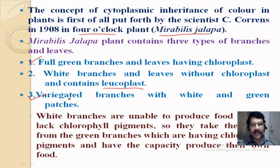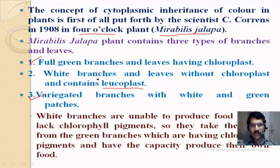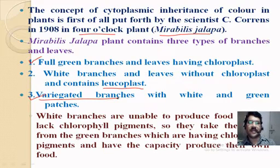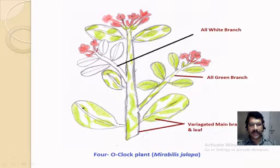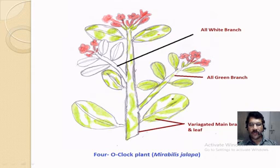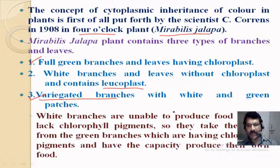The third type is variegated branches with white and green patches. These variegated branches contain some parts with chloroplast and some parts with leukoplast. Here you can see leaves with some parts green and some parts white. Variegation can be seen in the entire shoot as well as in the leaves.